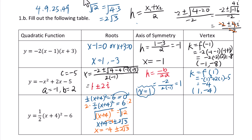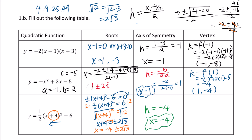For the axis of symmetry, h is the opposite of positive 4 — think about the transformation. x plus 4 means translate to the left 4 units, so h equals negative 4, and x equals negative 4 is the axis of symmetry. For the vertex, using the transformation, minus 6 means translate down 6 units, so the vertex is (negative 4, negative 6).